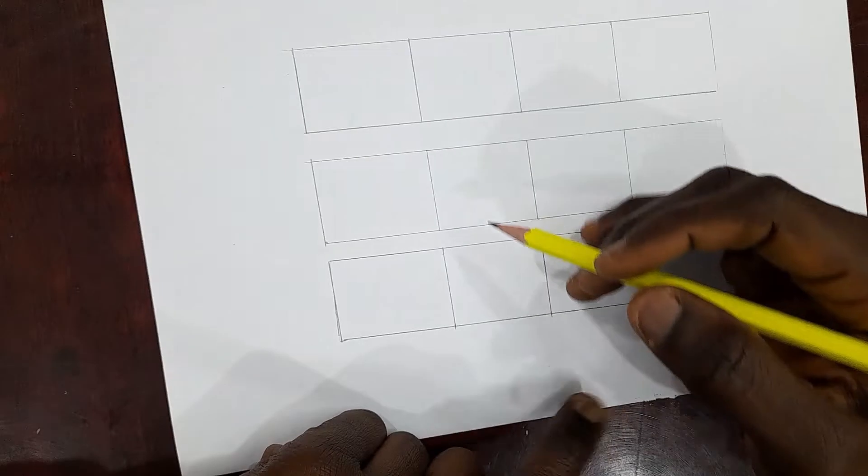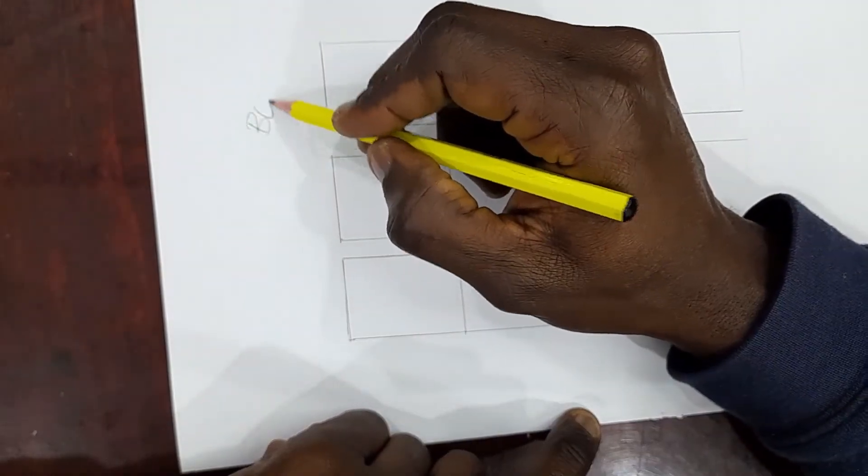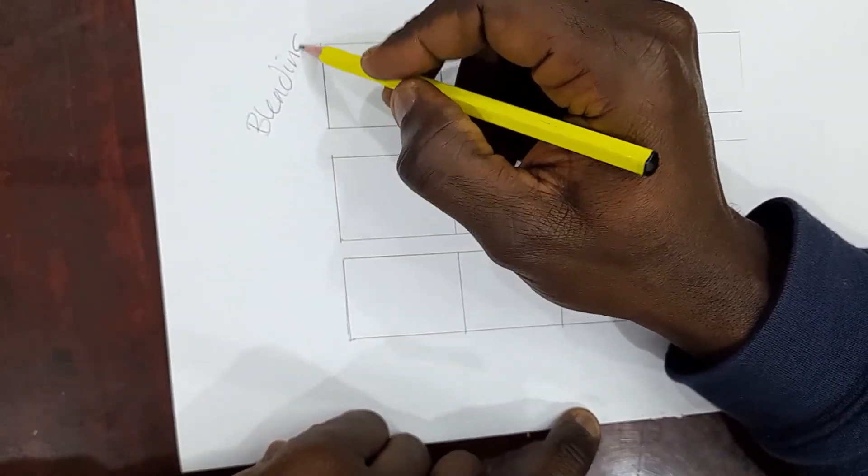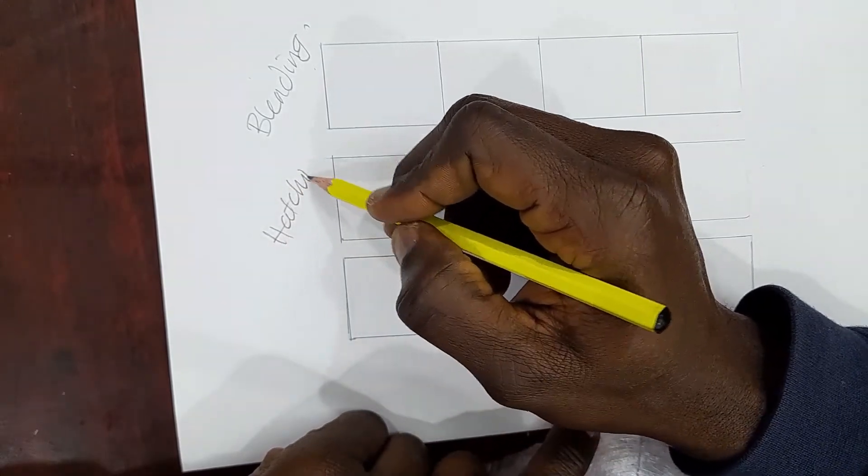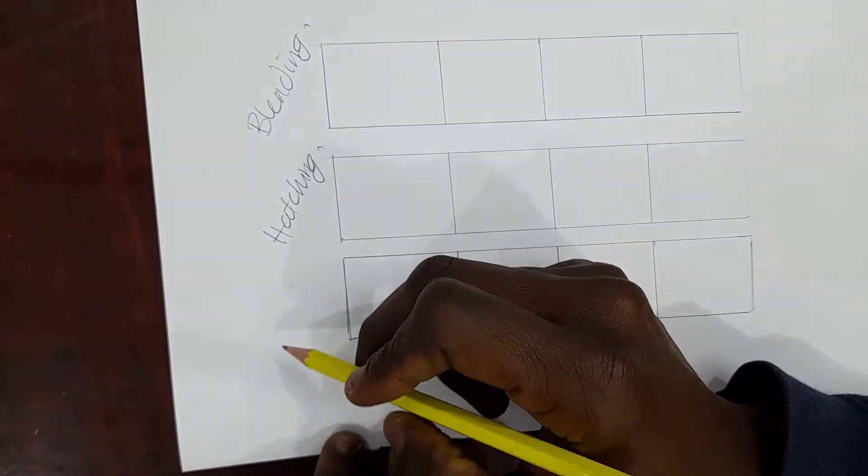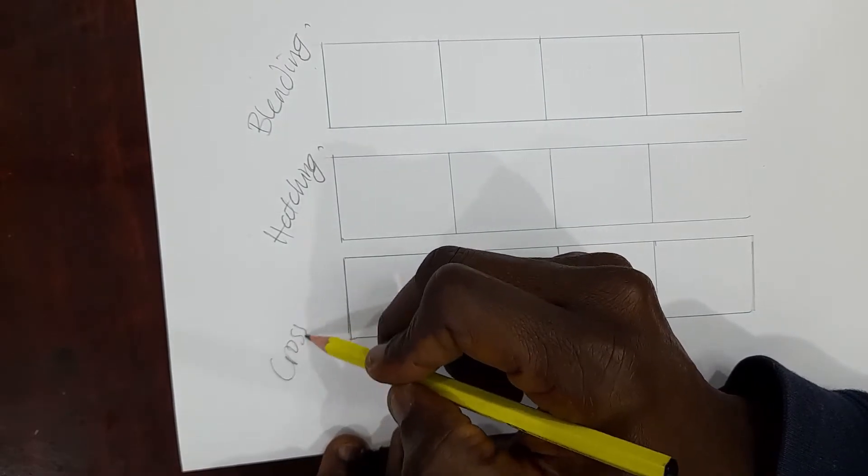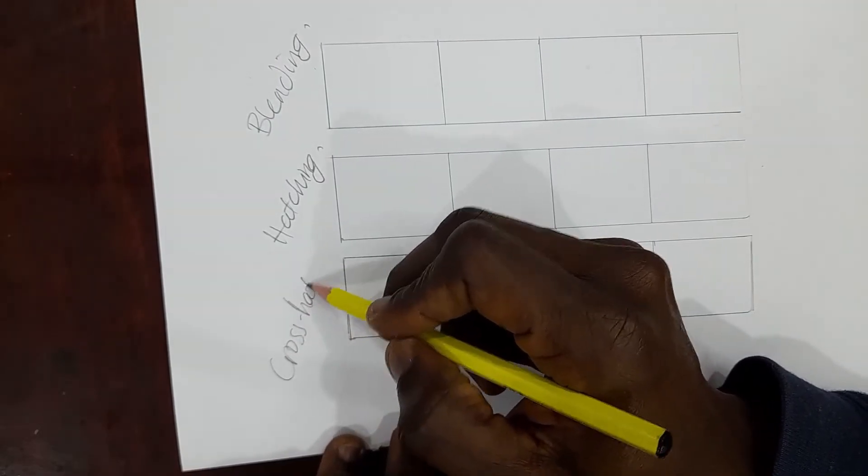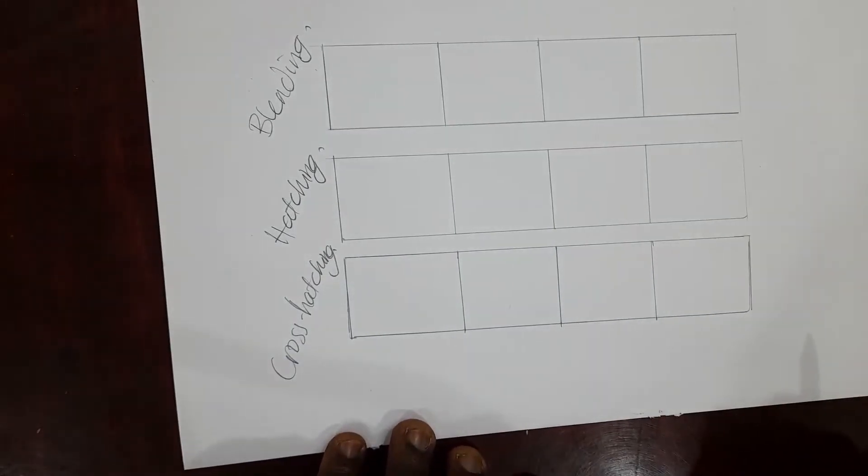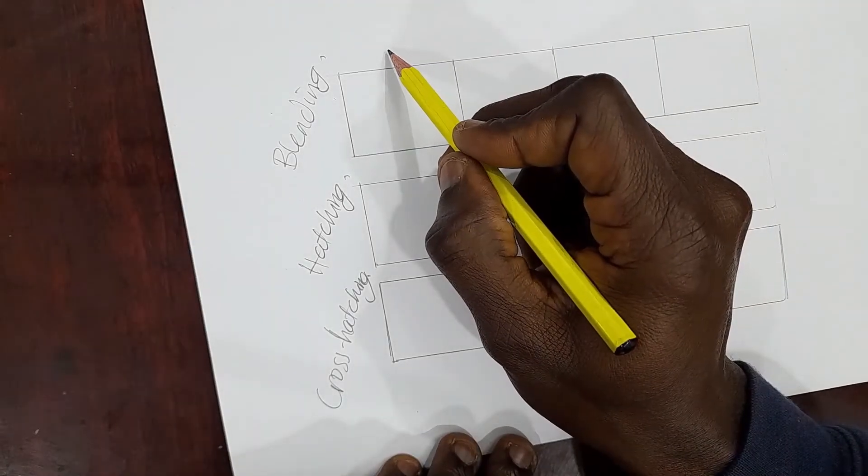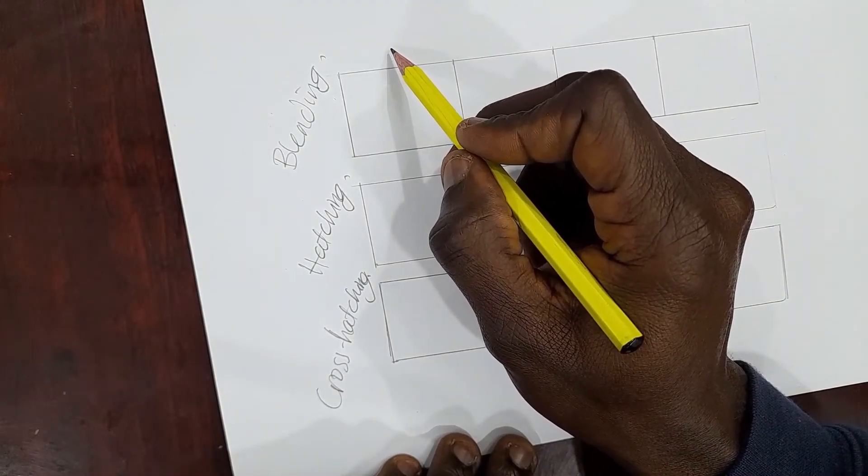The first one will be the blending technique. The second one will be the hatching technique, and the third one is going to be the cross-hatching technique. For each of these techniques I'll be giving you four different tones.